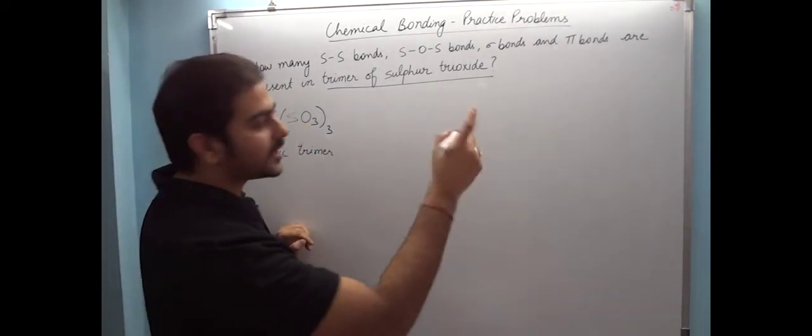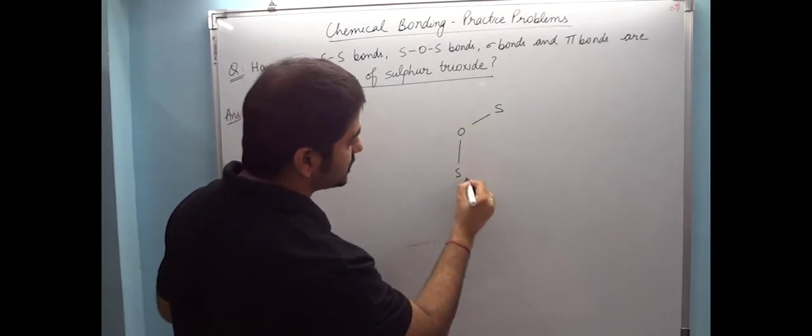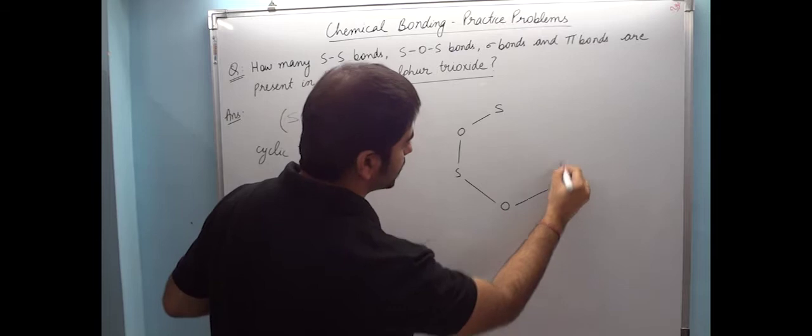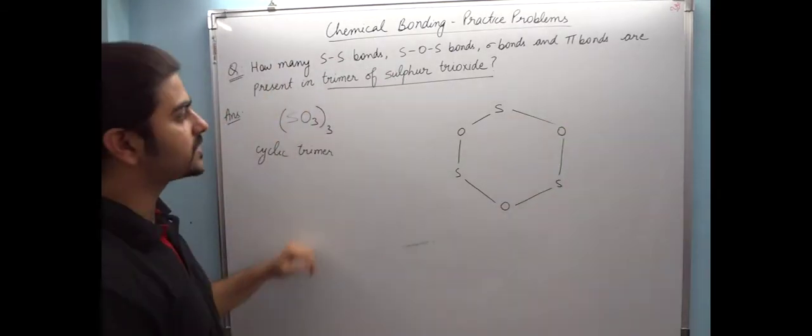Sulfur trioxide is going to be sulfur and oxygen, so alternatively sulfur oxygen, sulfur oxygen, sulfur oxygen. This is how we have a cyclic trimer.